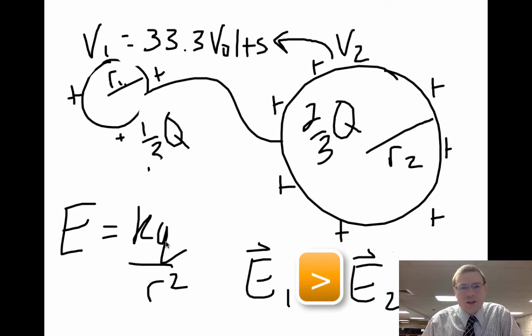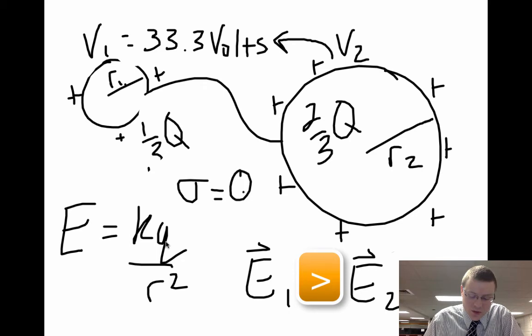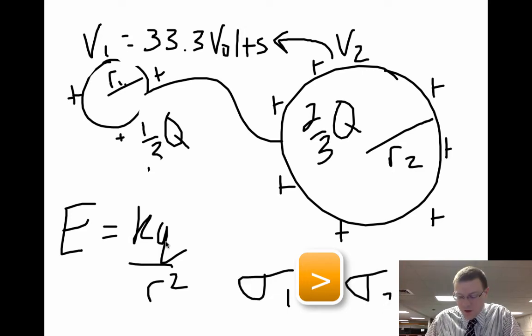And one other thing you could ask, what about the charge density? Well, charge density is charge per unit area. Again, we know that the small sphere has less charge, but it has a much smaller area. And since area is based off of R squared, the charge density of sphere one is also much greater than the charge density of sphere two.